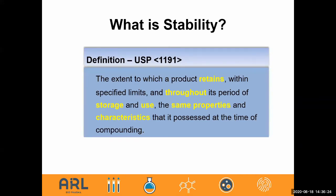The general definition from USP 1191 is: the extent to which a product or preparation retains within the specified limits, throughout its period of storage and use, the same properties or characteristics that it possessed at the time of compounding. Essentially, you want your drug product or preparation to remain in the exact same condition as it was when it was made.